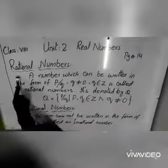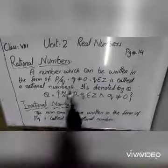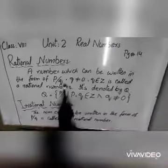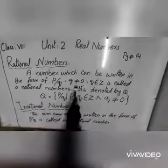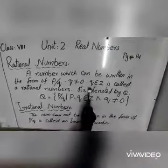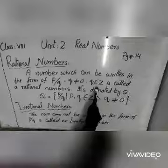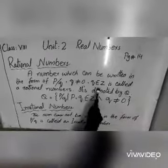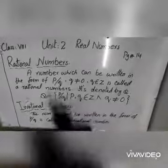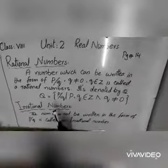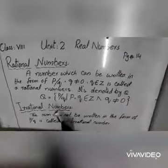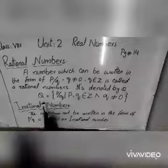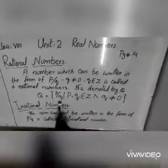First we define rational numbers. A number which can be written in the form of P/Q, where Q is not equal to 0, and P, Q belong to Z. Z kya hai? Z integers number hai — jo negative aur positive dono hote hain. Rational numbers P upon Q ki form mein likhe jate hain, and it is denoted by Q, where Q = P/Q.